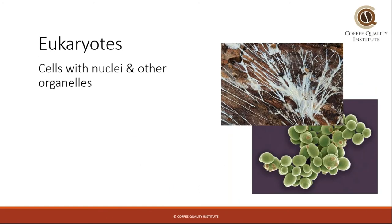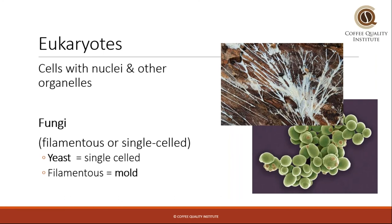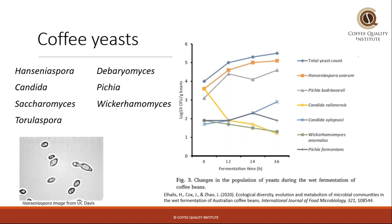Next, we're going to get into the eukaryotes. Eukaryotes are cells with nuclei and other organelles. We think about fungi when we think about coffee eukaryotes, and there are filamentous fungi and single-celled fungi — meaning yeasts or molds. Both yeast and mold are considered fungi and are eukaryotes. As with the bacteria, there is a large diversity of coffee yeasts prevalent in coffee fermentations. There are shown examples of the genera involved, and this graph from the same recent study shows only the yeasts present during the wet fermentation — a bunch of different species and genera contributing.